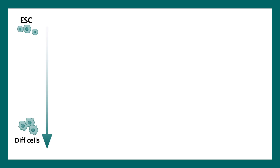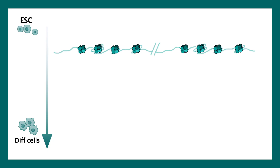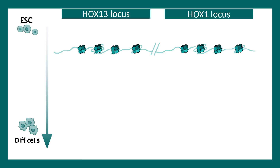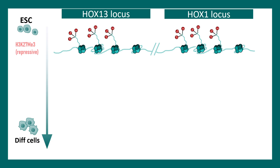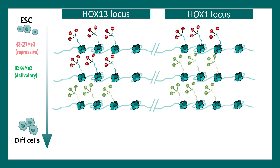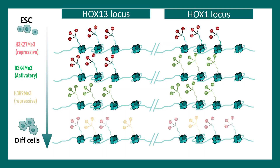During cellular differentiation from embryonic stem cells to differentiated cells, methylation at the histone can change at many loci. Looking at the HOX13 and HOX1 loci as an example: initially there is H3K27 trimethylation, which is a repressive mark. Eventually these marks are selectively altered by a combination of activatory and repressive marks, and in the differentiated cell a pattern of activatory and repressive marks ultimately decides whether these gene loci would be activated or repressed.